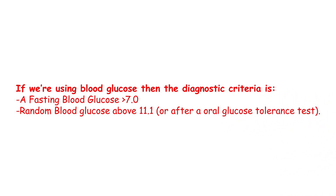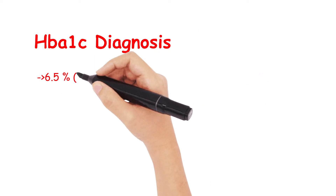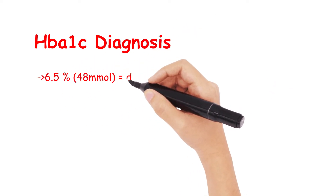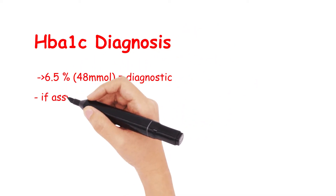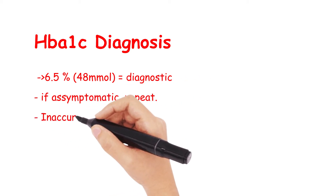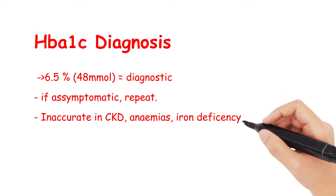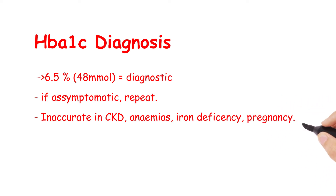If a patient, however, is asymptomatic, then these results would need to be repeated to ensure the diagnosis. If you're using an HbA1c, a value greater than 6.5% is diagnostic, but again, asymptomatic patients ought to have this repeated. It's worth noting that a wide range of conditions such as CKD, haemolytic anaemia, and severe iron deficiency anaemia would render the HbA1c invalid.